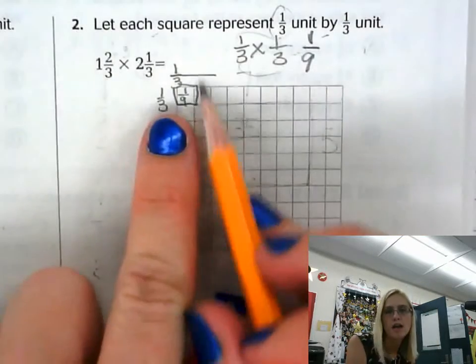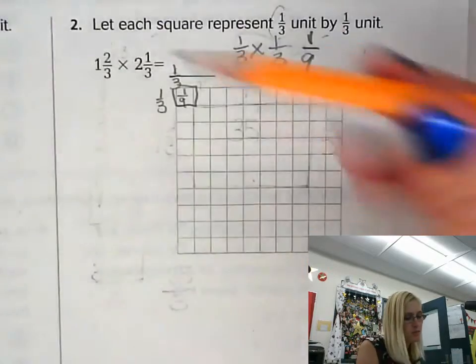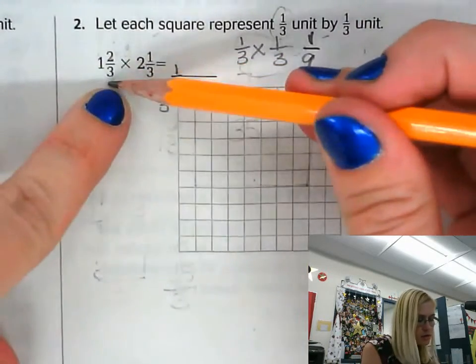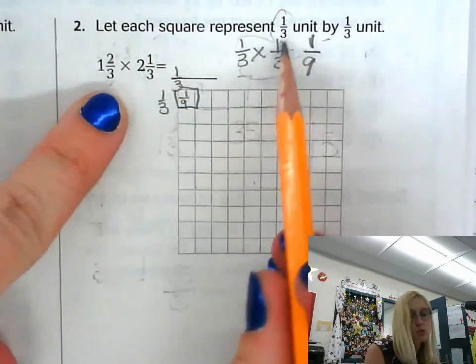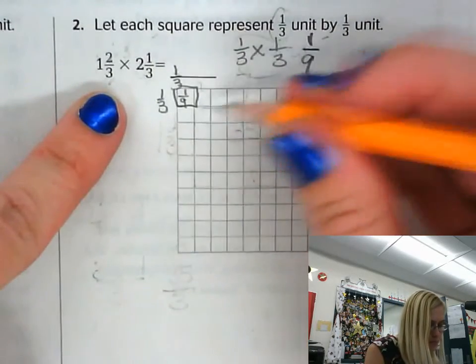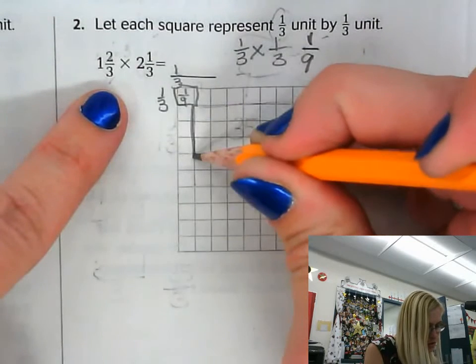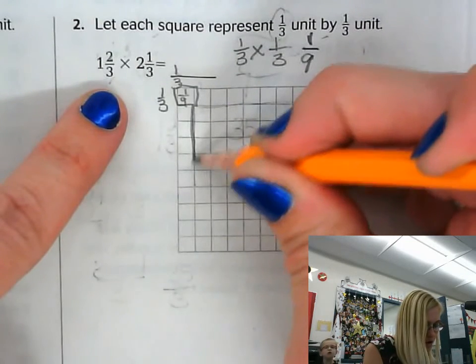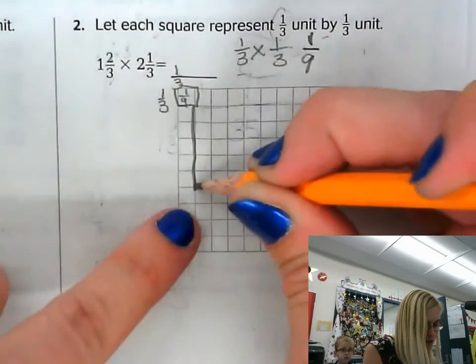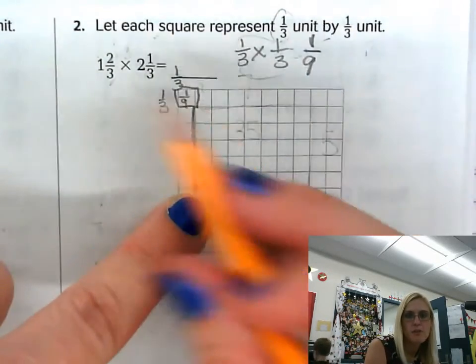So the area of one tile is actually one ninth. Now the next step that I'm going to do is I'm actually going to draw out one and two thirds. In this instance, each one only represents one third, so I need to be sure to count that. What I'm going to do is I'm going to go down one third, two thirds, three thirds which is one whole, and then one third, two thirds, and that's where I'm stopping at. So that is actually representative of my one and two thirds.